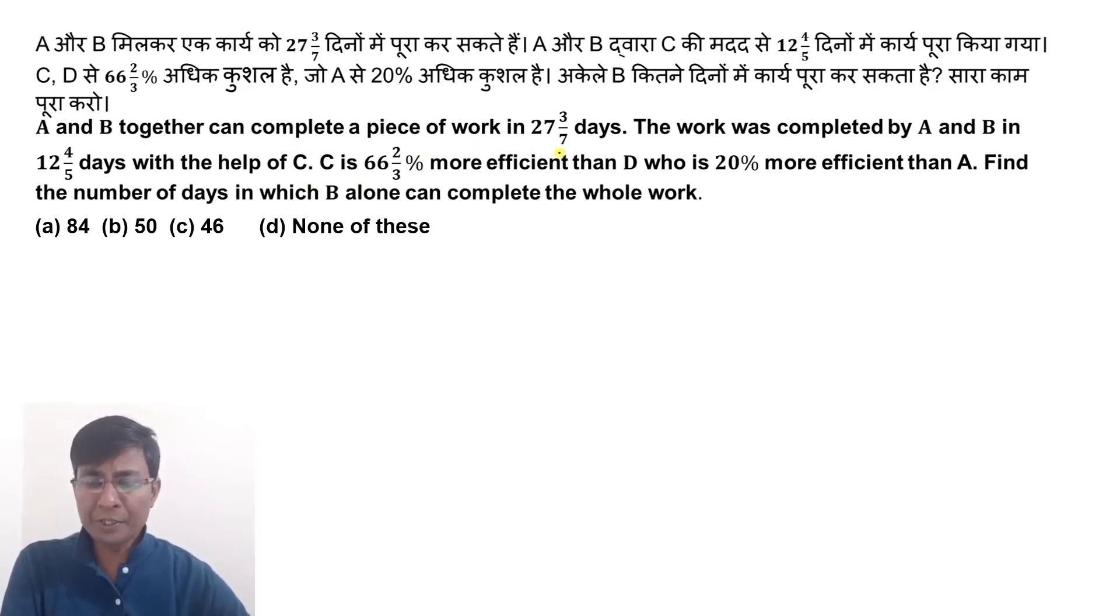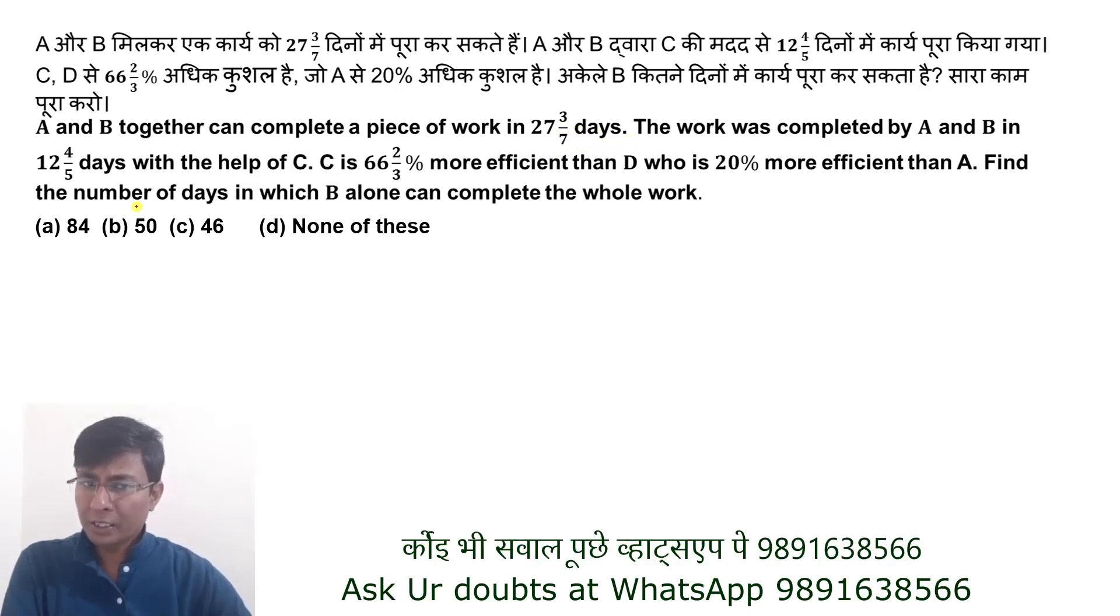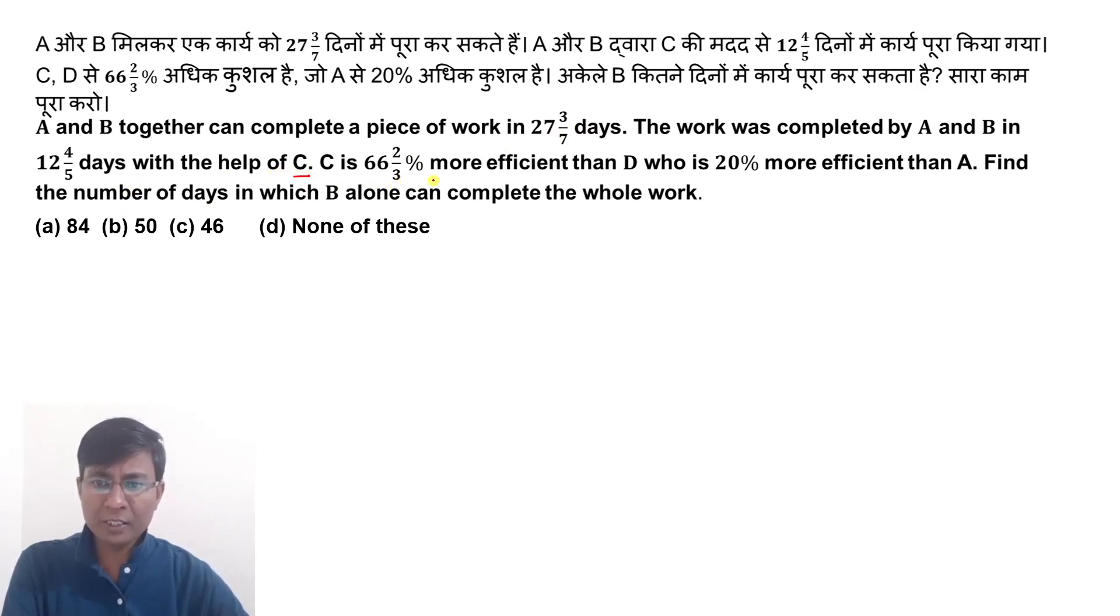A and B together can complete a piece of work in 27 3/7 days. The work was completed by A and B in 12 4/5 days with the help of C. C is 66 2/3 percent more efficient than D who is 20 percent more efficient than A. Find the number of days in which B alone can complete the whole work.